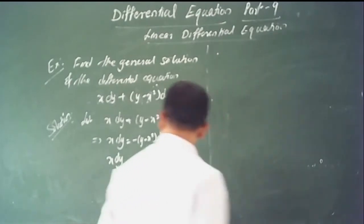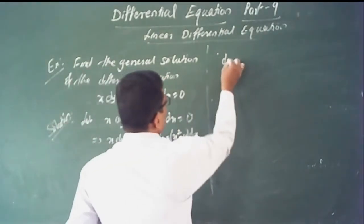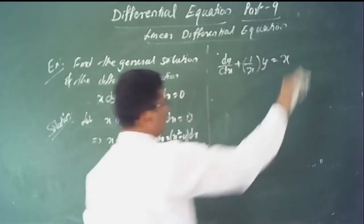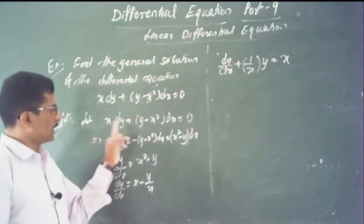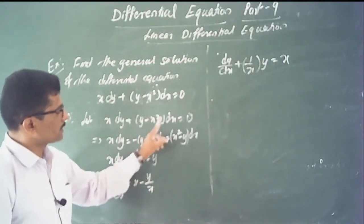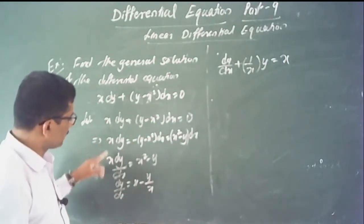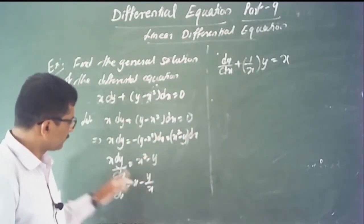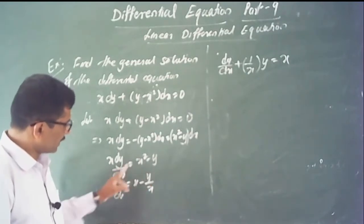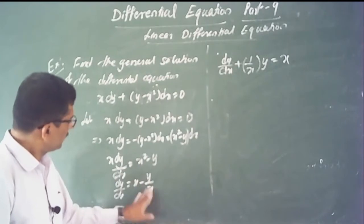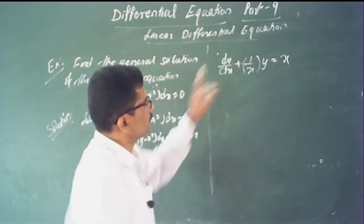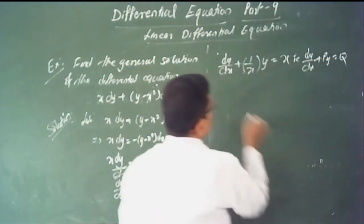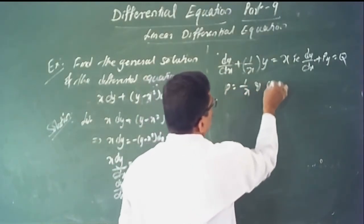Rewriting in standard form: dy/dx plus 1/x times y equals x. This is in the form dy/dx plus p times y equals q, where p equals 1/x and q equals x.